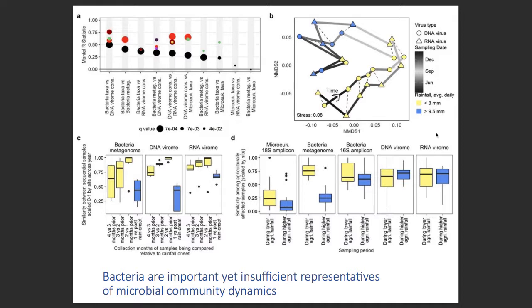There are other differences too. Looking at a Mantel statistic comparing bacteria versus DNA viruses, bacteria taxa versus bacteria metagenomics, and bacteria taxa versus RNA virome, you can see the degree of synchrony. An NMDS plot of DNA viruses and RNA viruses revealed really surprising synchrony over time. In the Vancouver area where samples were taken, we have a dry season and wet season, and you can clearly see the community shift from dry to wet season. We would not have seen this if we'd just been looking at bacterial data.